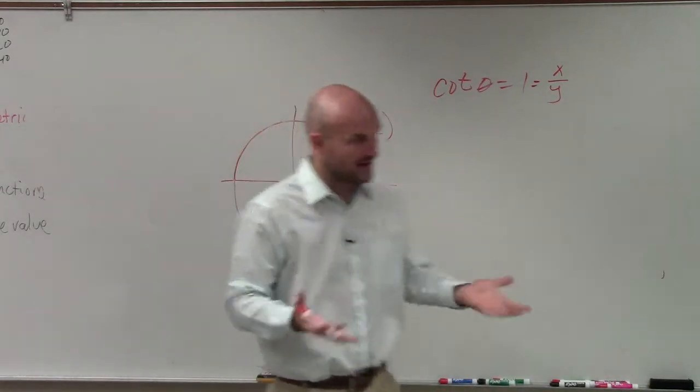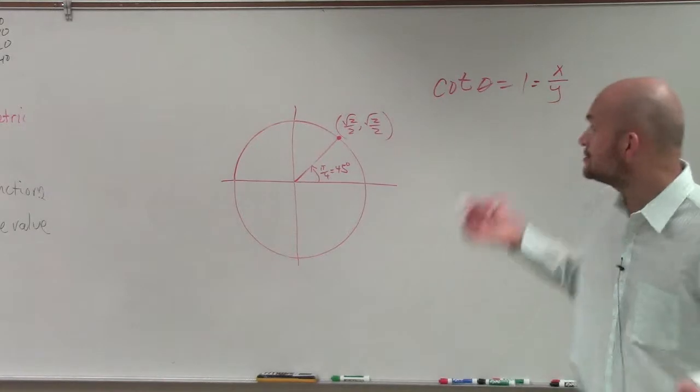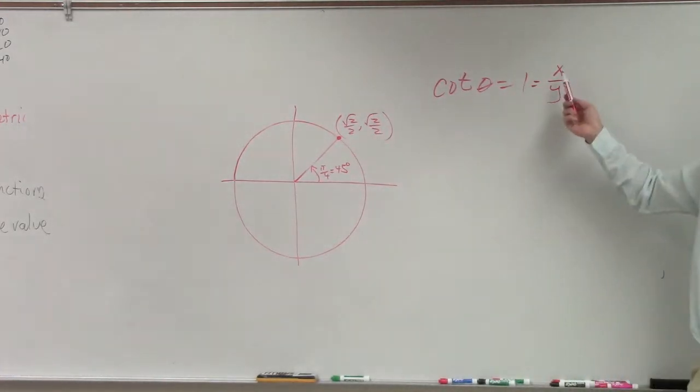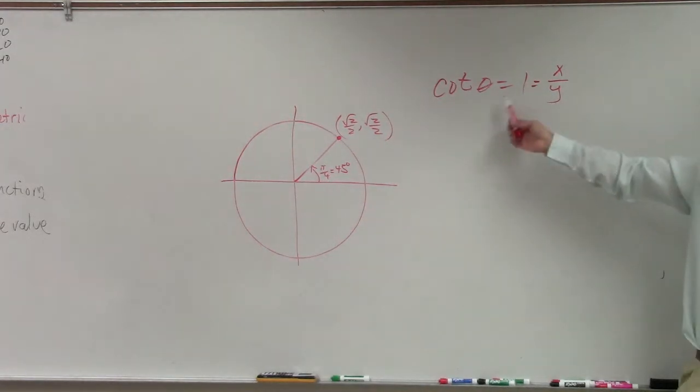By remembering the first quadrant of the unit circle, we know that these two points are exactly the same. So if I do x over y, if I did square root of 2 over 2 divided by square root of 2 over 2, that's going to equal 1.